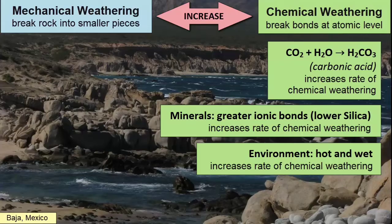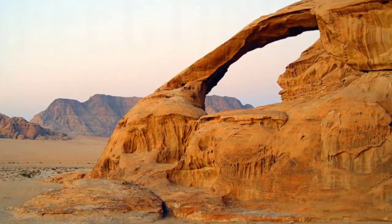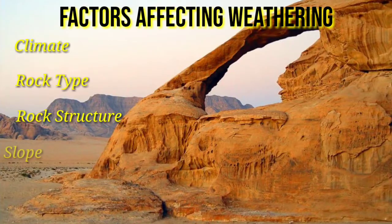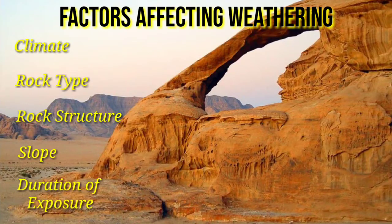So hot, wet climates have the highest rates of chemical weathering. Cold, dry climates like at the poles or at high elevations have the slowest rates. Climates with regular freeze-thaw cycles will have increased rates of frost wedging, and climates with hot days and cool nights have increased rates of exfoliation. The type, extent, and rate of weathering are affected by the following factors: climate, rock type, rock structure, slope, and duration of exposure.